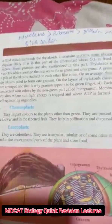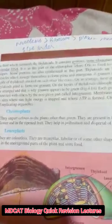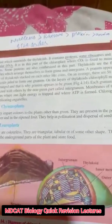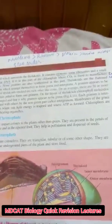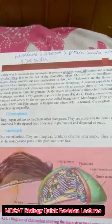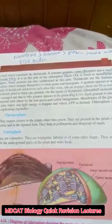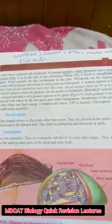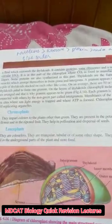Chloroplasts also contain a fluid that surrounds the thylakoids. This fluid contains proteins, ribosomes, and a small circular DNA. An important feature is that chloroplasts contain circular DNA.